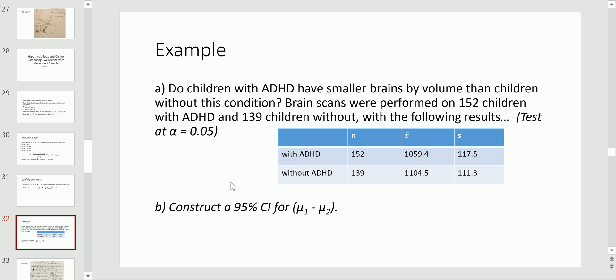Do children with ADHD have smaller brains by volume than children without this condition? We're measuring volume probably by centimeters cubed. Brain scans are performed on 152 children with and 139 without ADHD. The results are as follows. So, here we go. We got nicely organized in a table. I'm going to call this group 1, call this group 2. And so, anywhere you see subscripting later on, you know how I did it. You don't have to do it like this. You could flip these. Just stay consistent.